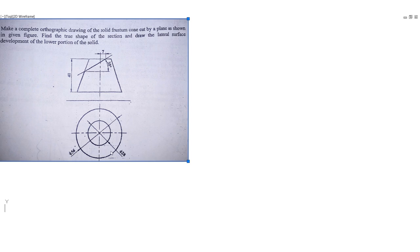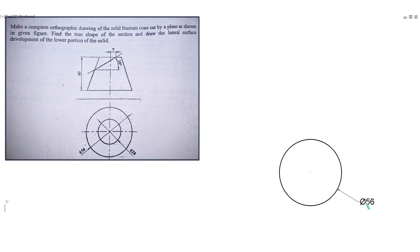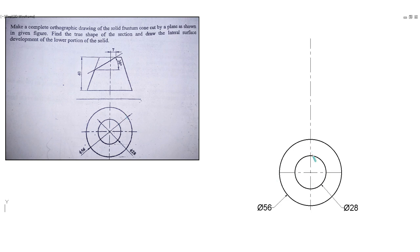Now I am going to start with the top view. We can see that there are two concentric circles of diameter 56 and diameter 28. I have made the circle of diameter 56, and now I will make the inner circle of diameter 28 using the same center. Then I am going to make the center lines and place the X and Y axis at a distance of 10 mm away from this reference point.